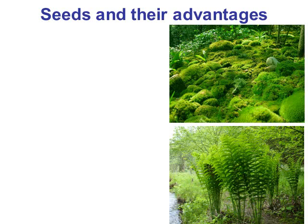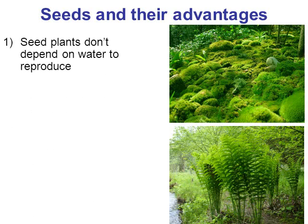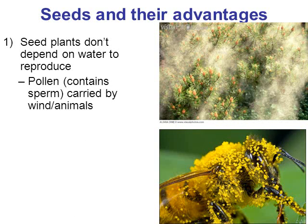Before we get into gymnosperms specifically, let's talk about seeds and their advantages. Whether it's a gymnosperm or angiosperm, they make seeds, and seeds provide advantages. Number one, seed plants don't depend on water to reproduce. Mosses and ferns are seedless and need to live in moist environments because they make sperm cells that actually swim through a layer of water to fertilize an egg. Gymnosperms and angiosperms don't rely on water to reproduce — they produce pollen, which is often carried by wind or by pollinating animals, like a bumblebee. Because they don't directly rely on water to reproduce, it allowed them to evolve and diversify over more habitats.